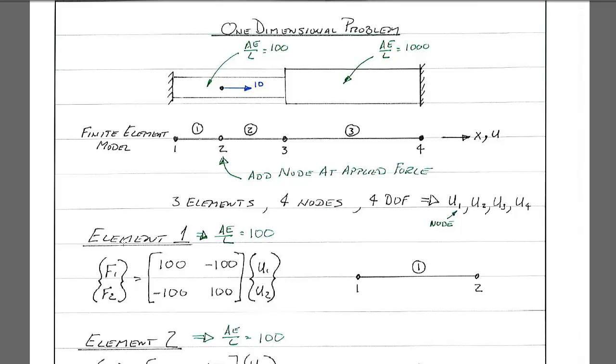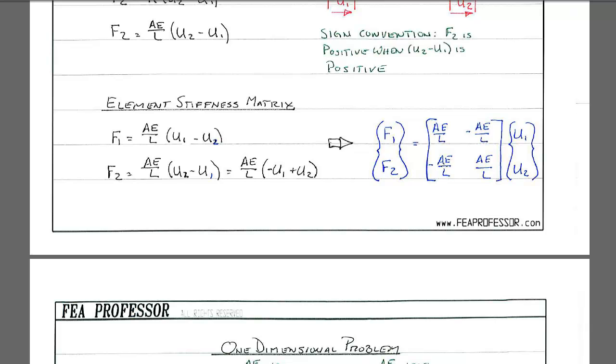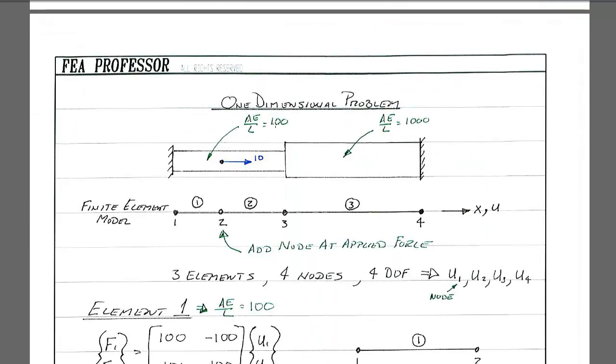So if we look at the element 1 equation, the stiffness matrix, we have f1 is equal to 100, that was the AE over L from before, times u1 and minus 100 times u2. So it's the same matrix that we had just before. It's plus, minus, minus, plus. So we're just plugging in the AE over L that we have for this, the 100 here.